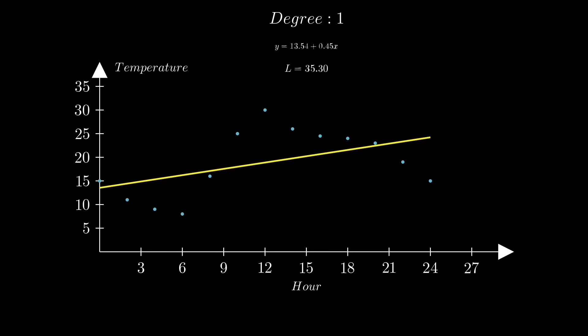We can examine the best fit straight line alongside these data points. Do you believe the relationship it depicts is accurate? It seems somewhat off. These points obviously exhibit fluctuations throughout the day. It shouldn't be a straight line.